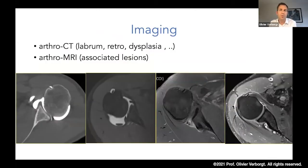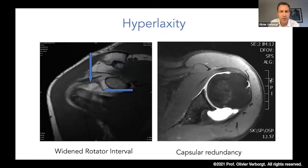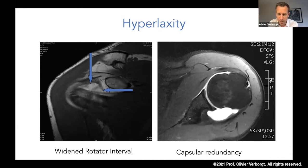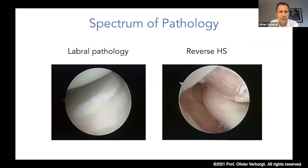Before surgery, imaging is important — quite similar to anterior instability. Depending on where you work, both CT arthrogram and MRI arthrogram are good options. CT arthrogram is a little better for labrum pathology and seeing glenoid retroversion or dysplasia, while MRI arthrogram gives a better full picture and sometimes reveals associated lesions. Hyperlaxity is often present; sometimes the only finding is a widened rotator interval. Also check the posterior capsule — many patients with truly symptomatic posterior instability show capsular redundancy. Be careful for associated lesions, such as a spinoglenoid cyst causing significant infraspinatus atrophy.